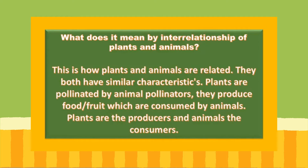They have similar characteristics. In order for plants to be pollinated, the pollination has to be done by other animals or animal pollinators, such as bees. They produce food, such as different kinds of fruits, and all those different kinds of fruits are then consumed by animals, for example, humans. We know that plants are producers — they produce the food — and animals are the consumers. What the plants produce, the animals consume.